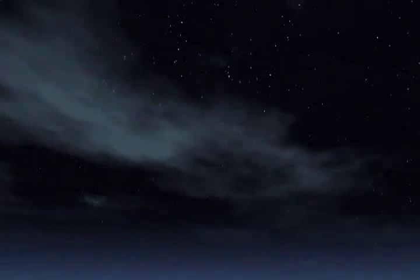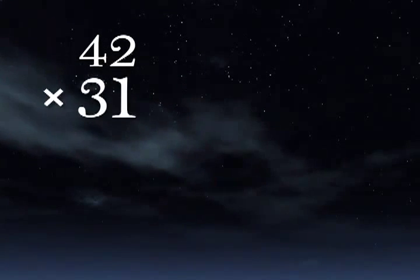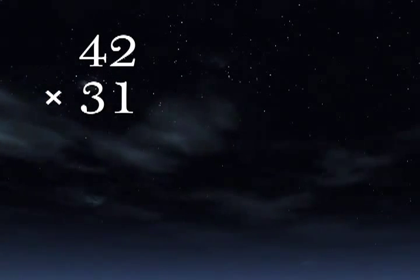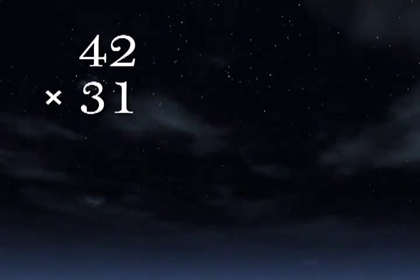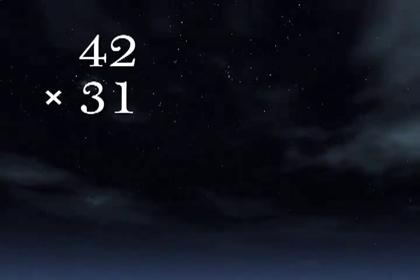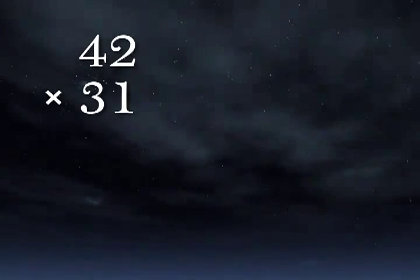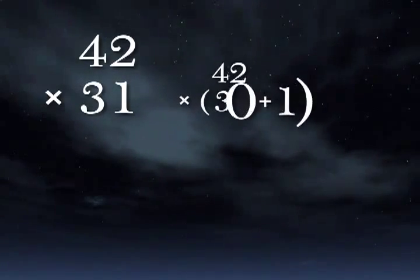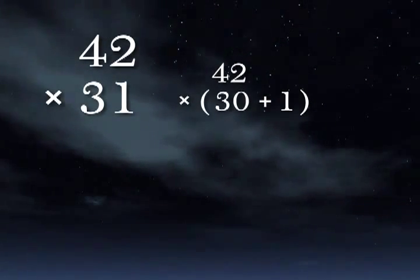Of course, there's also an addition method. Try this for yourself. What's 42 times 31? You're being asked for 31 groups of 42. Instead, let's call it 30 groups of 42 and then add an additional 42.